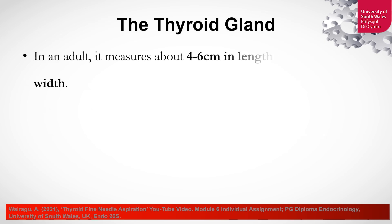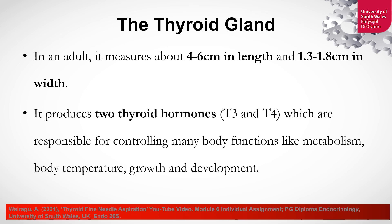In an adult, it measures around 4 to 6 centimeters in length and around 1.3 to 1.8 centimeters in width. It produces two hormones, the T3 and T4, which are responsible for controlling many body functions like metabolism, body temperature, growth, and development.